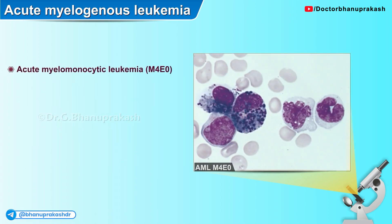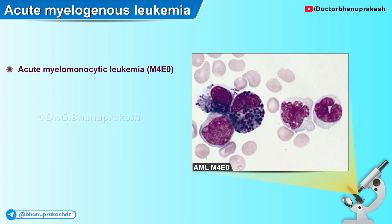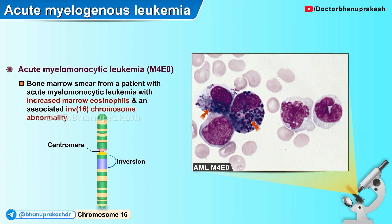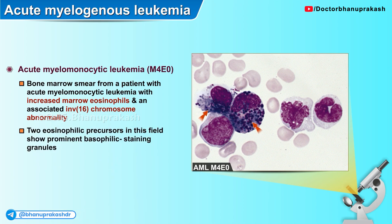Here is another histopathological image of a bone marrow smear from a patient with acute myelomonocytic leukemia with increased marrow eosinophils and an associated inversion of chromosome 16 abnormality, as diagnosed on flow cytometry. The two eosinophilic precursors in this field show prominent basophilic staining granules.